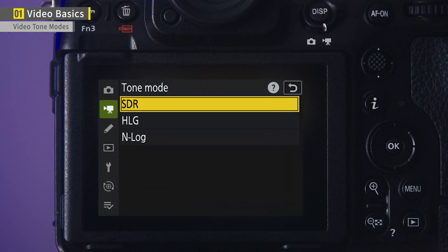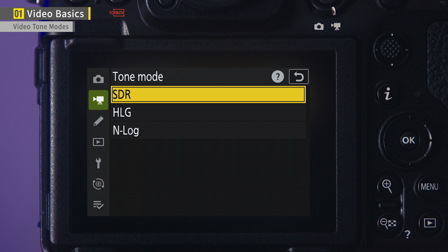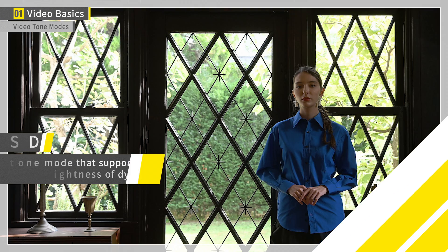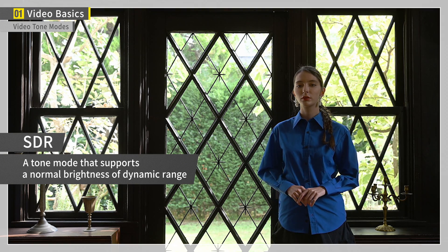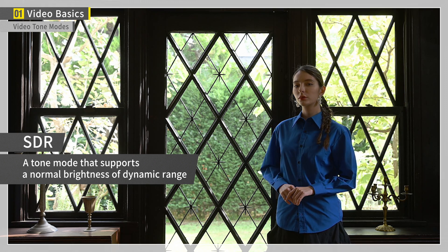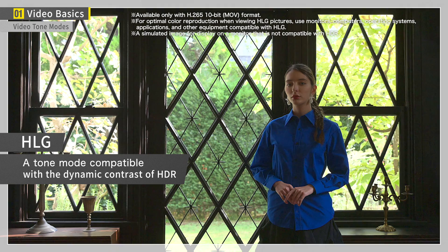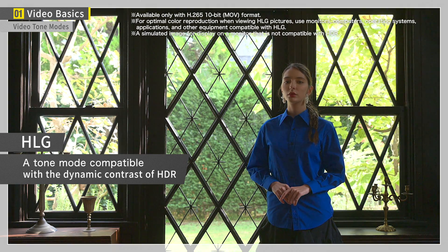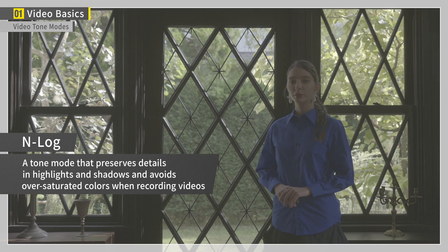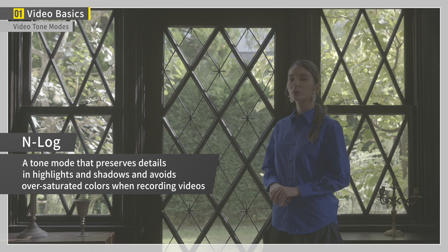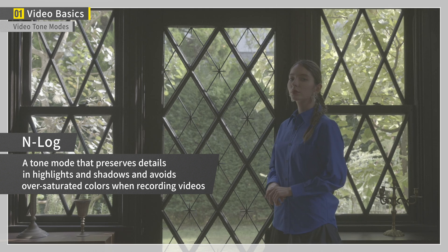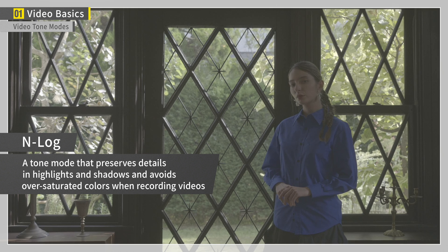Many newer cameras allow you to configure the tone mode for video. On the Z8, you can choose from HLG and N-Log in addition to the regular SDR, for a total of three types. SDR is a standard tone mode that supports a normal brightness and dynamic range. HLG is a tone mode compatible with the dynamic contrast of HDR. N-Log is a tone mode designed for color grading that preserves details in highlights and shadows, and avoids oversaturated colors when recording videos. If you don't have a preference, it's safe to go with SDR.